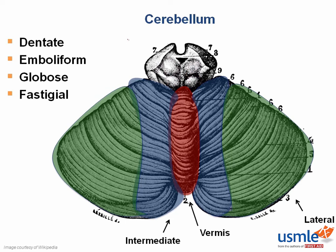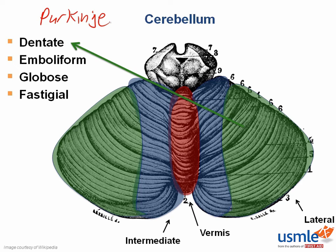The output from the cerebellar cortex is carried to the cerebellar nuclei via Purkinje cells — an important cell type frequently discussed in neuroscience. There are four nuclei in the cerebellum: the dentate nuclei receive input from the lateral cerebellar hemispheres; the emboliform and globose nuclei receive input from the intermediate hemispheres; and the fastigial nuclei receive input from the vermis.